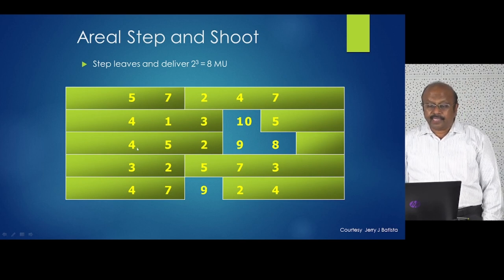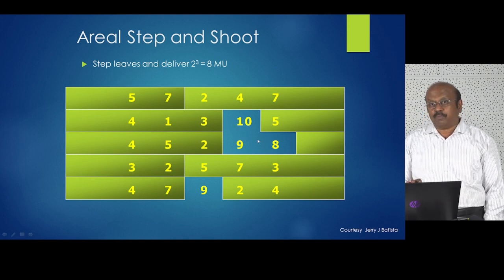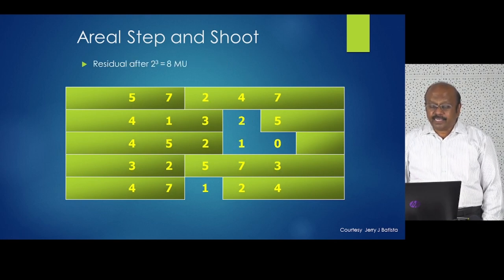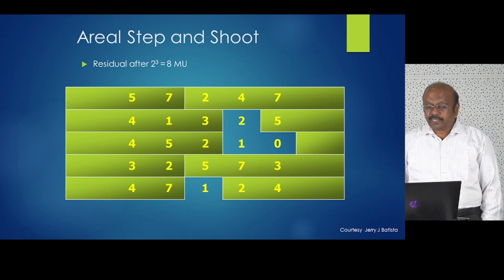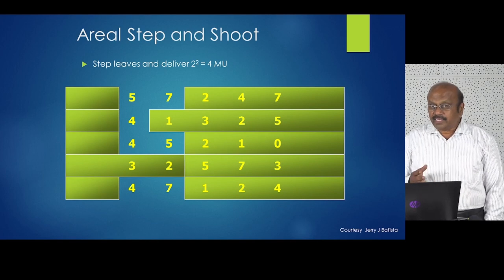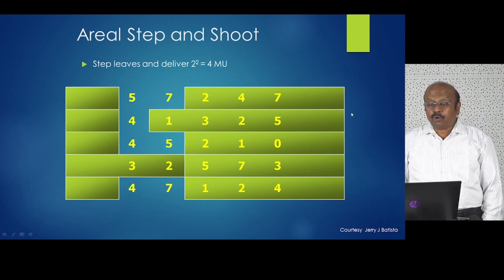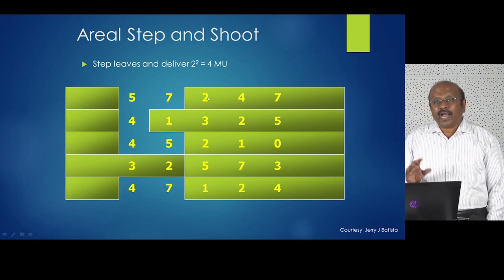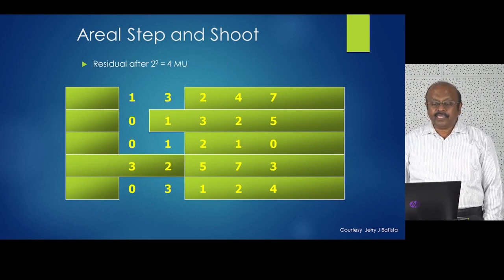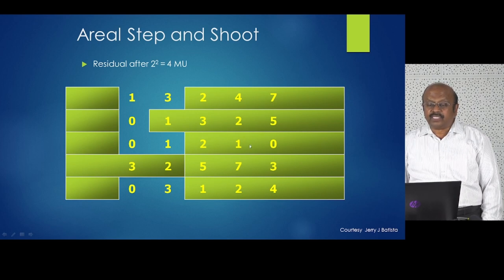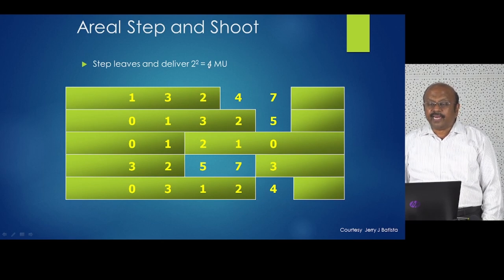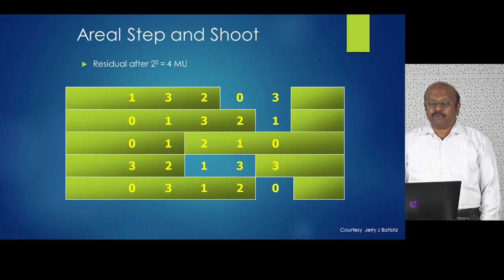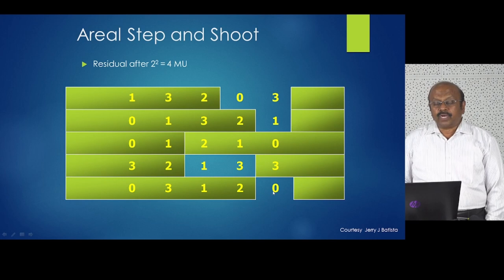Now going to 2^2 = 4: I see where it is 4 or more and open that. However I can't open continuously because some areas have only 2 remaining, so I split into two segments. I deliver 4 MU in the first part — residuals become 1, 3, 1, 0, 3 — then deliver another 4 MU in the other part — residuals become 0, 3, 1, 1, 3, 0. Three segments delivered so far: 8 MU, 4 MU, 4 MU.